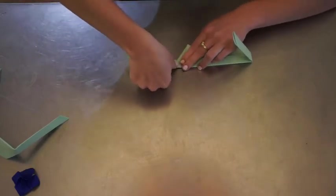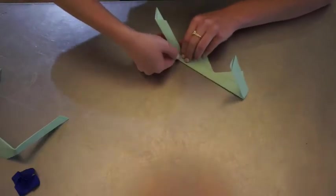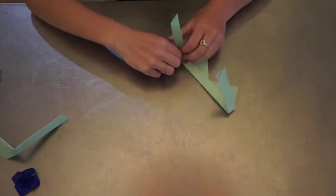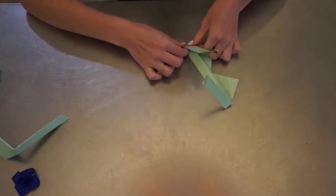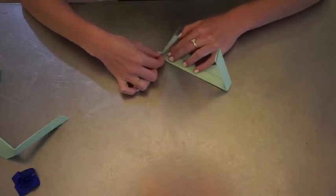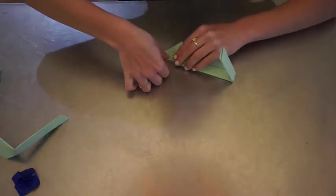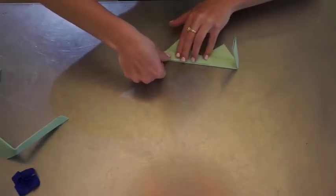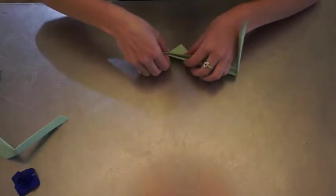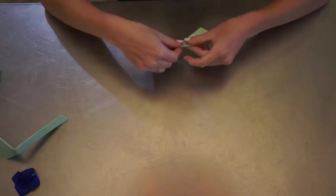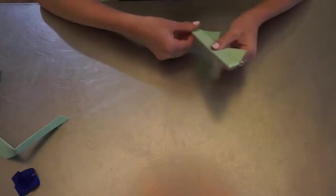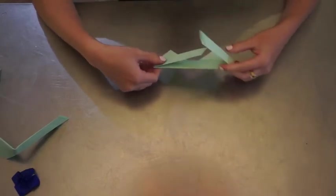Then you're going to do the same thing over here on this side. However far you folded it on the other side, you just want to make it the same so that your side pieces on your sunglasses are the same length. Just make sure all of the layers are lined up and you can flatten everything down.